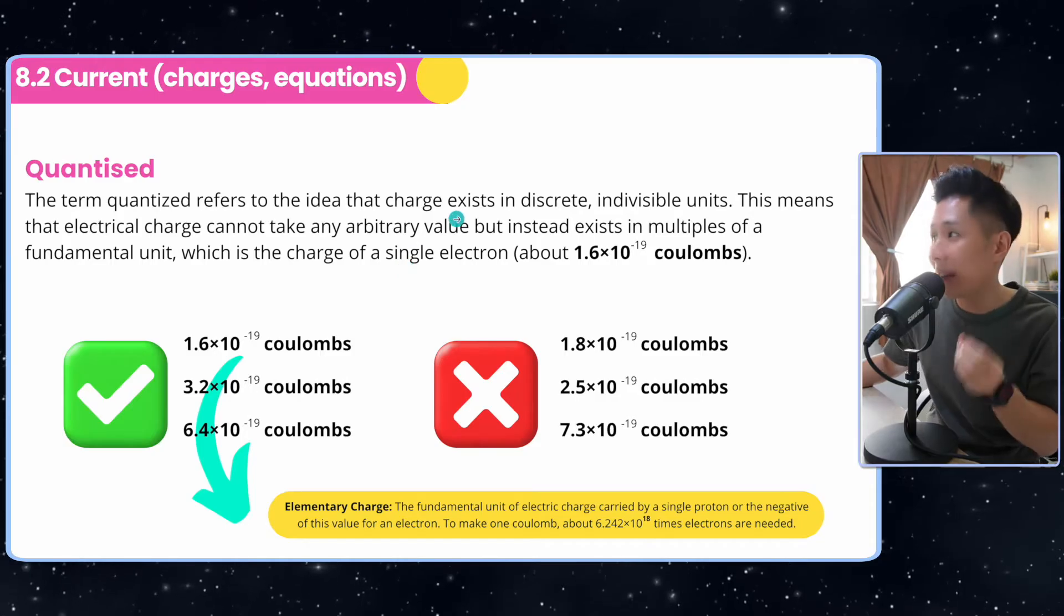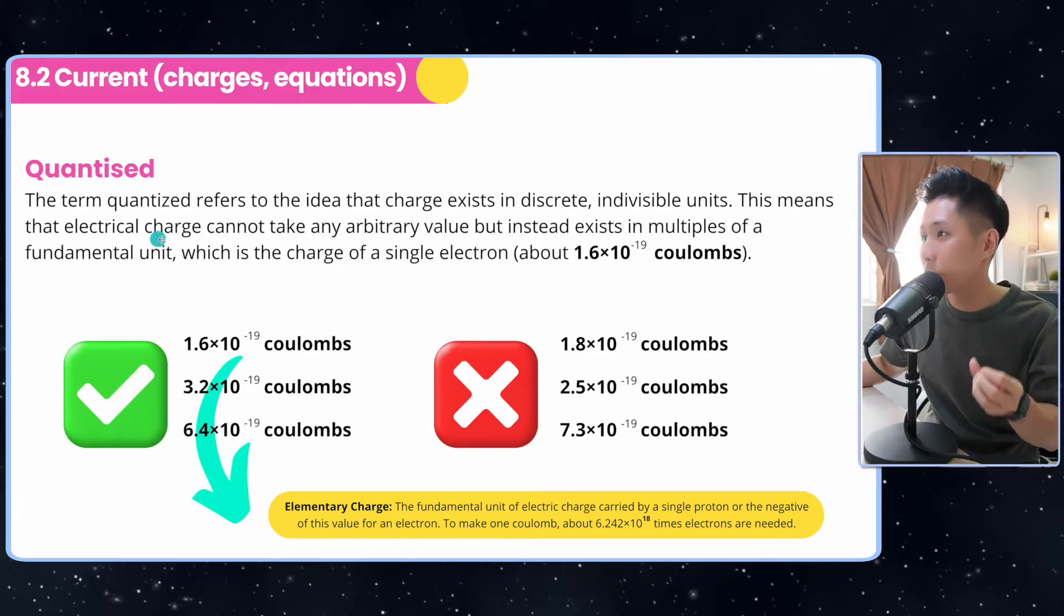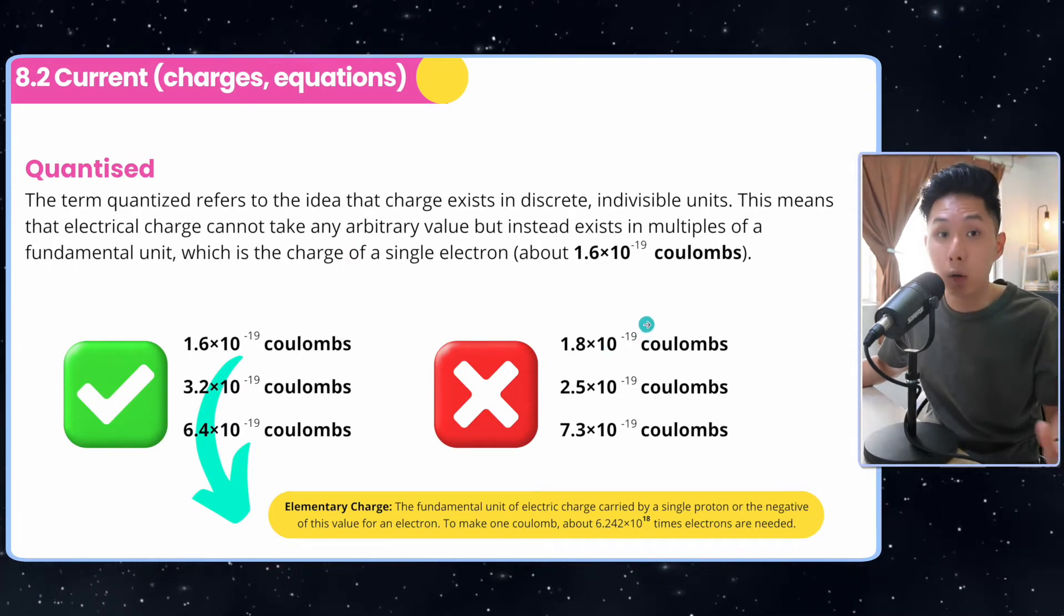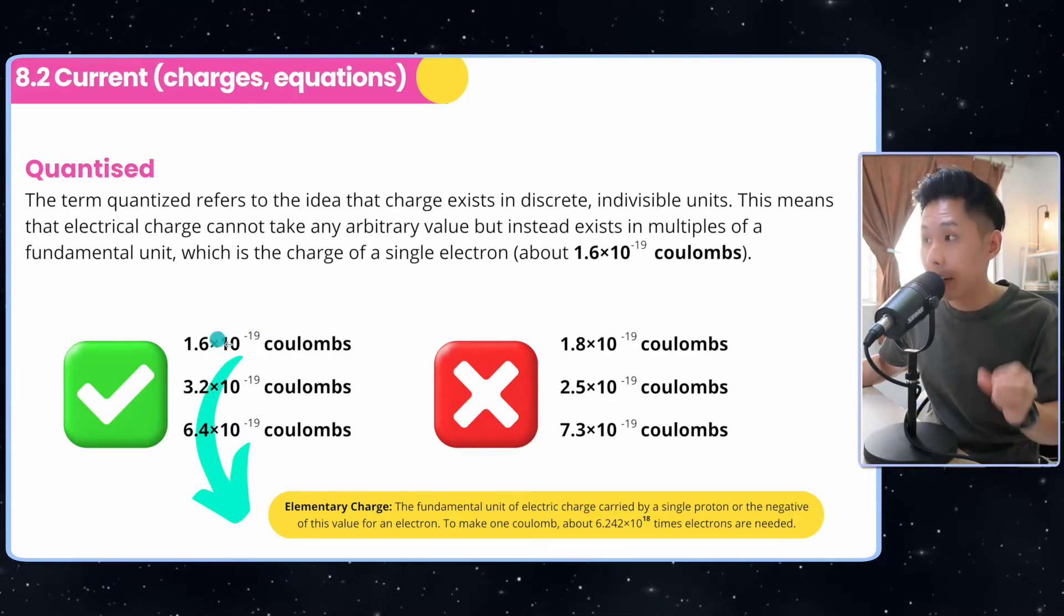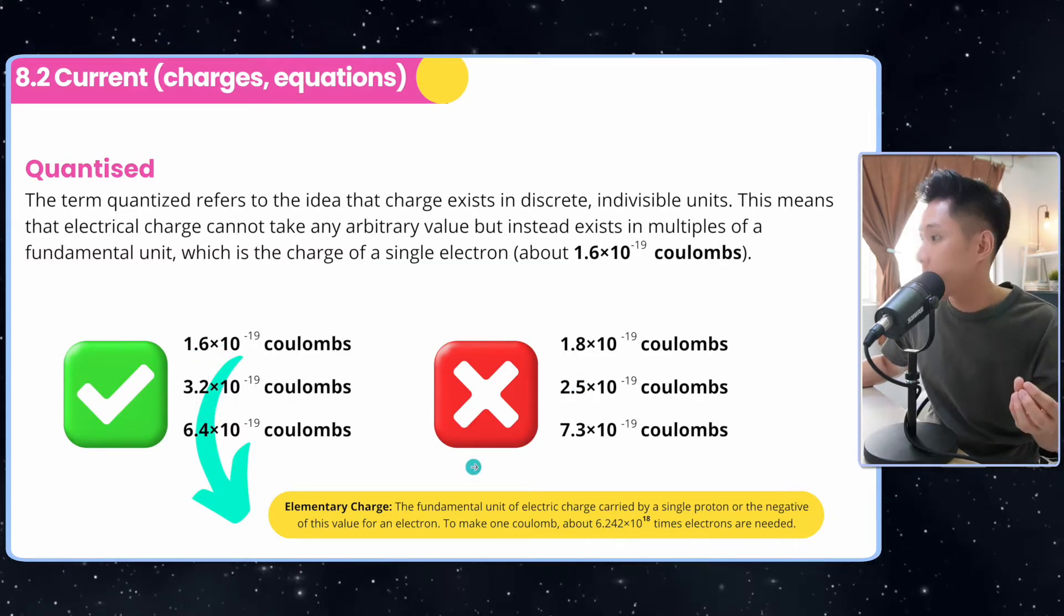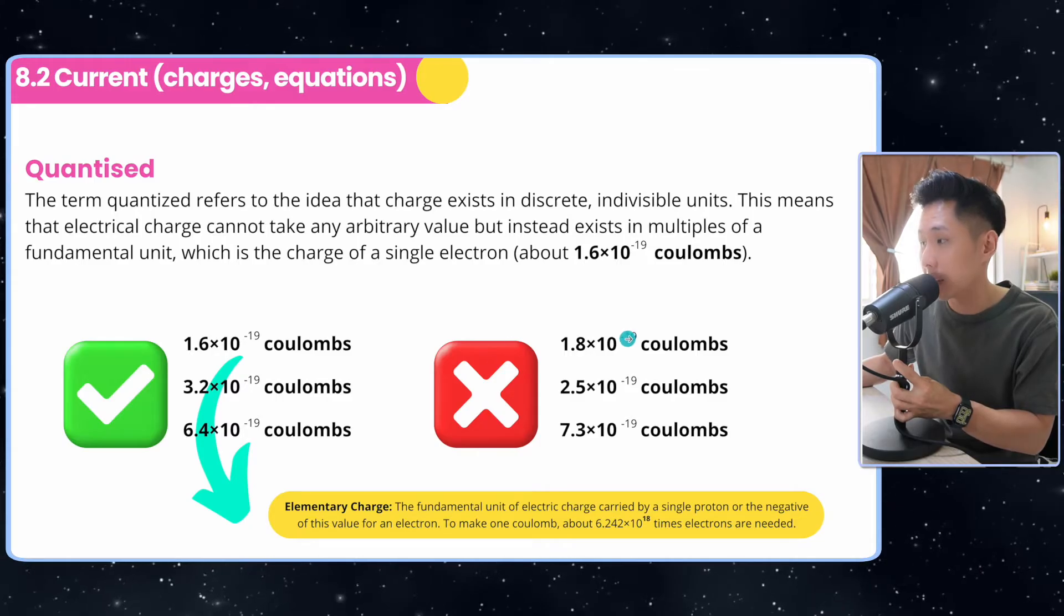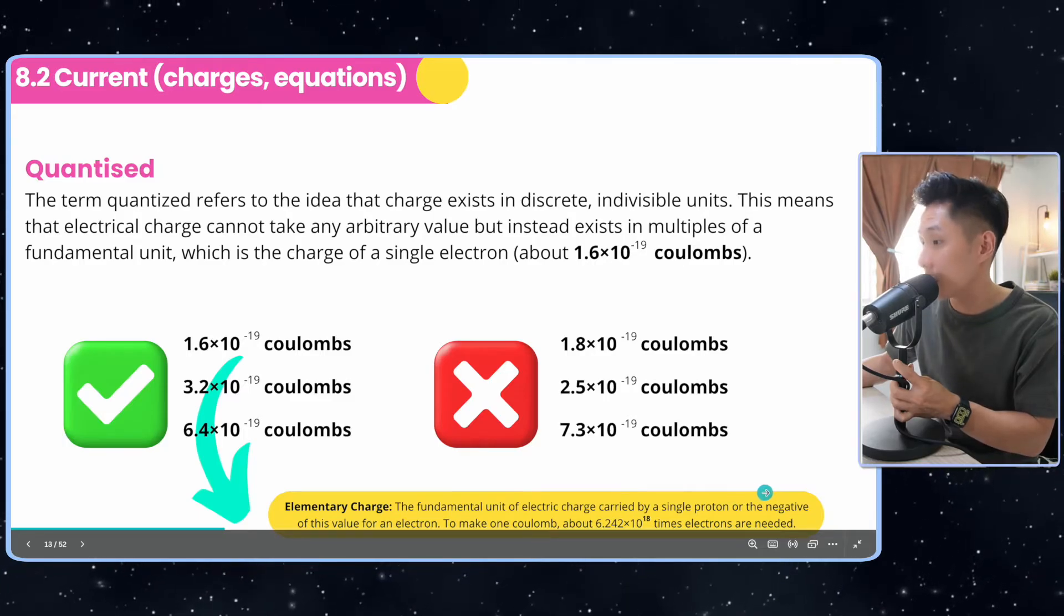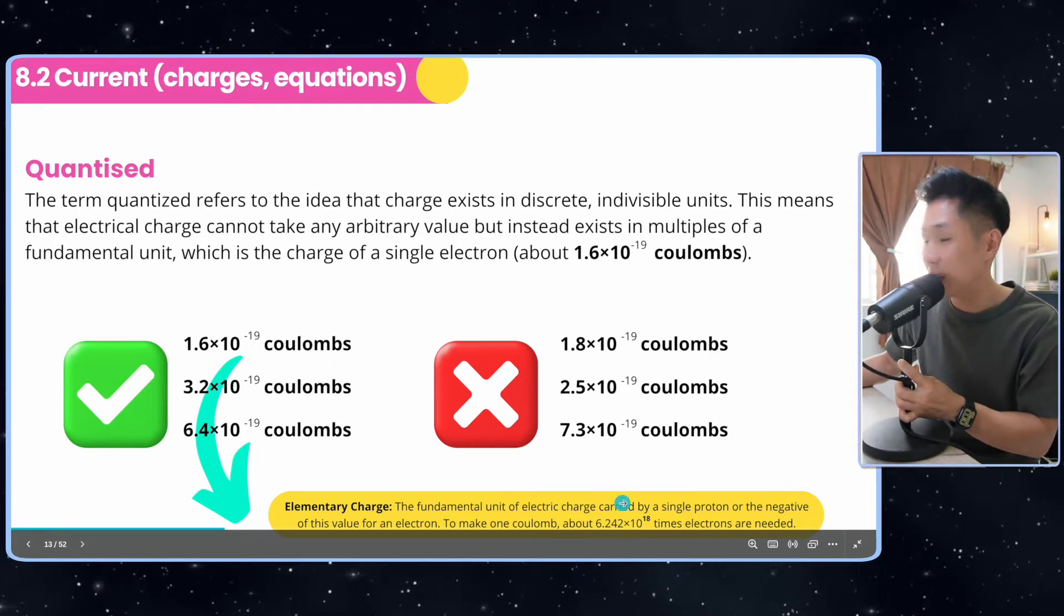Quantized means that these charges exist in discrete indivisible units. So what do I mean by that? This means electrical charge cannot take any arbitrary value. It can't just take 1.8 times 10 to the power of negative 19 Coulomb. It has to be in the multiple of 1.6 times 10 to the power of negative 19. So the next value, it can't be 2, 2.5. It can only be 3.2, 4.8 and 6.4. So this is what quantized means, the charge of one electron. So that means you cannot have random values. An elementary charge here refers to the fundamental unit of electrical charge carried by a single proton or the negative of this value for an electron. And to make 1 Coulomb, you will need this amount of electrons.